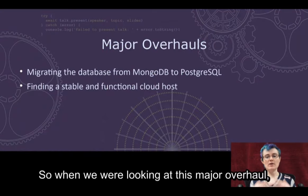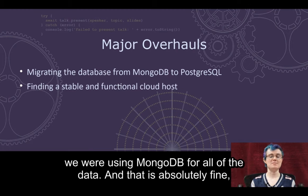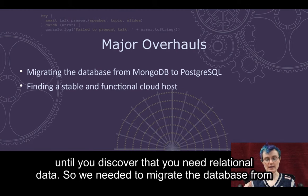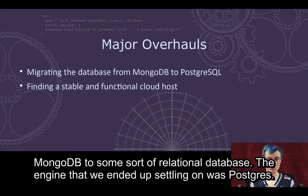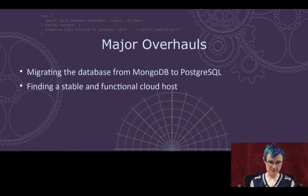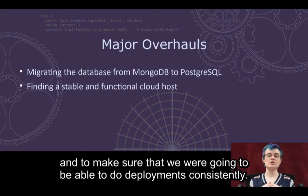When we were looking at this major overhaul, there were two aspects that were my responsibility. The first was that we were using MongoDB for all of the data, which is fine until you discover that you need relational data. So we needed to migrate the database from MongoDB to a relational database — the engine we settled on was Postgres. The other thing I needed to work out was how to find a stable and functional cloud host and ensure we could do deployments consistently.